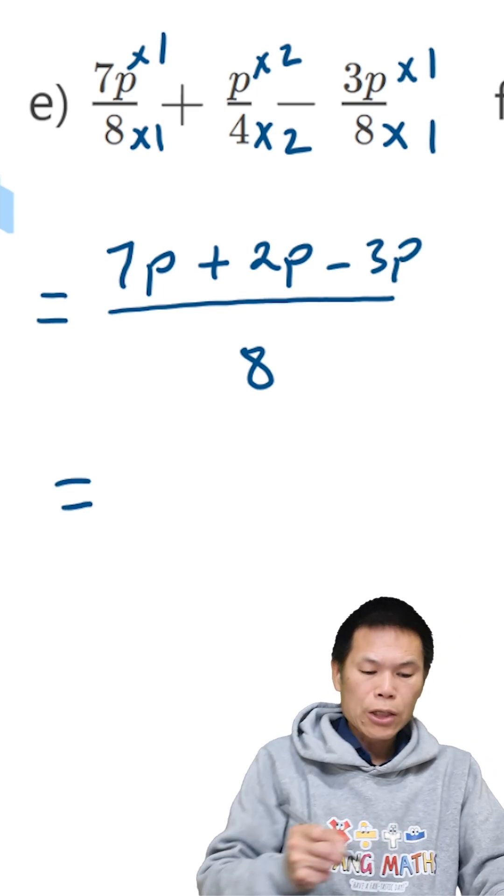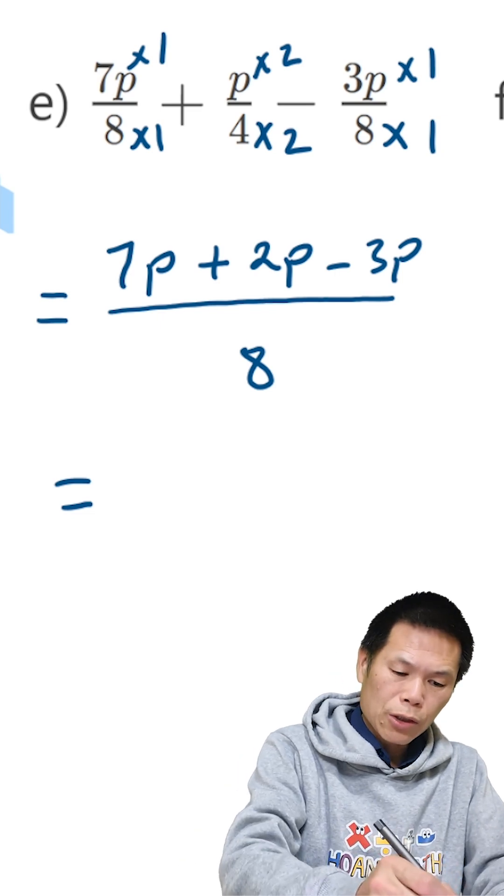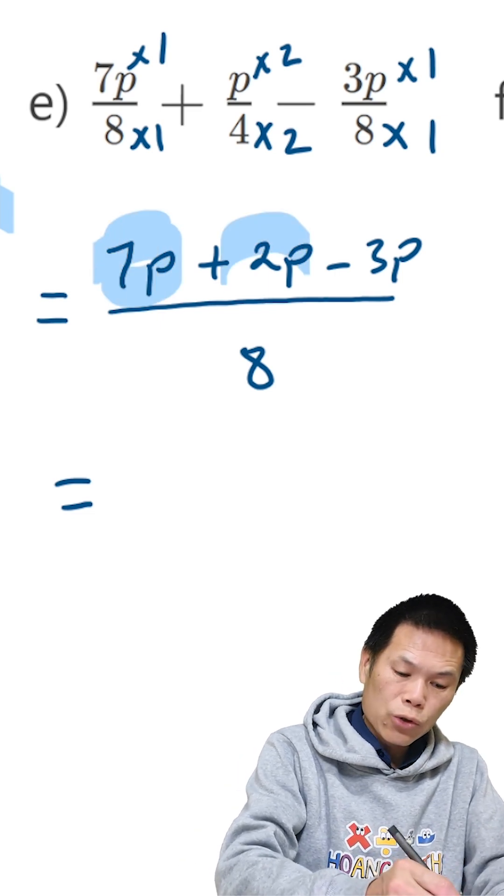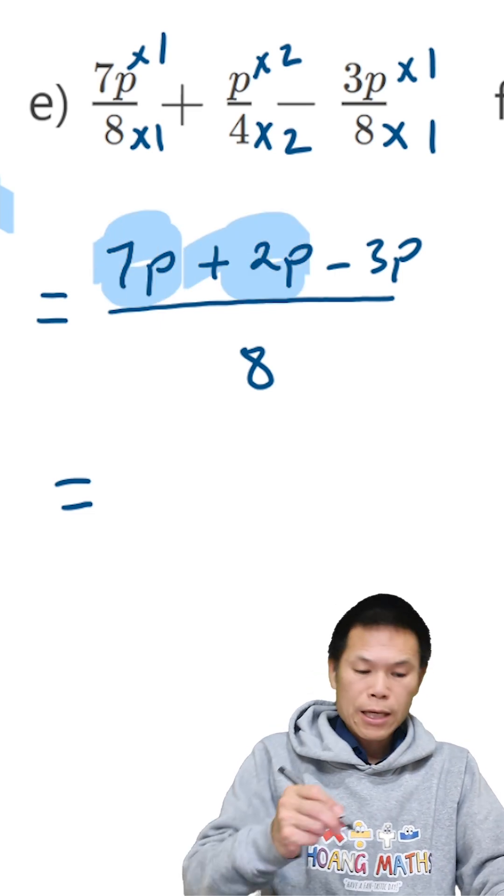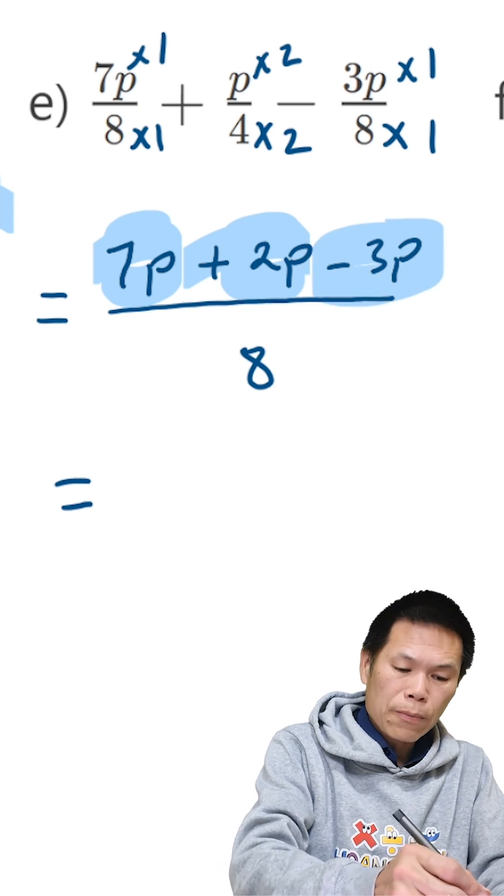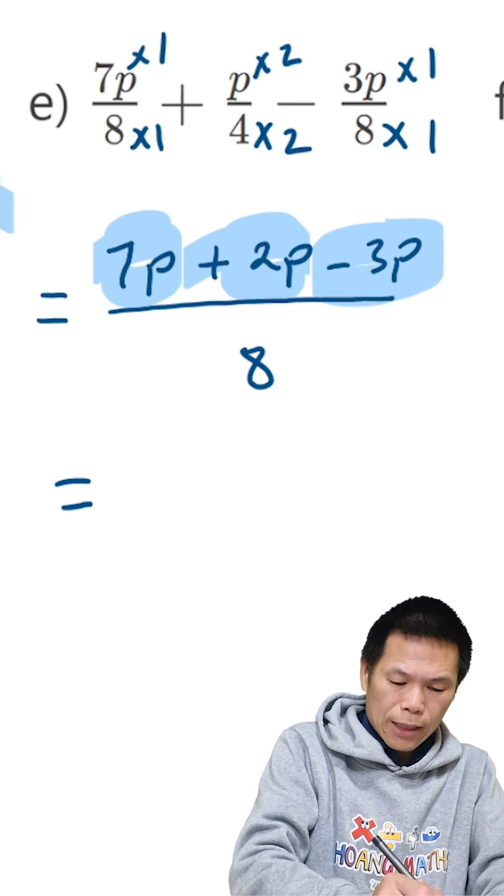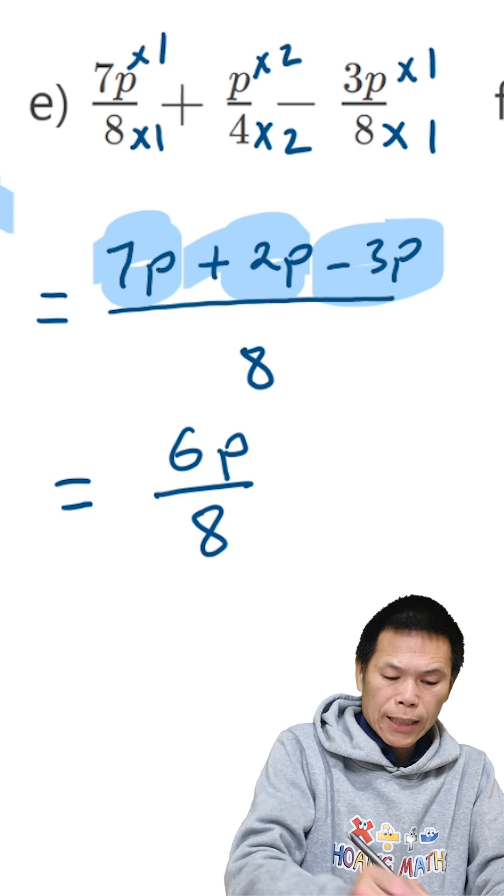So now, I just collect the like terms. So that means 7, add 2, give me 9. And 9 minus 3 is 6. So the answer is 6P over 8.